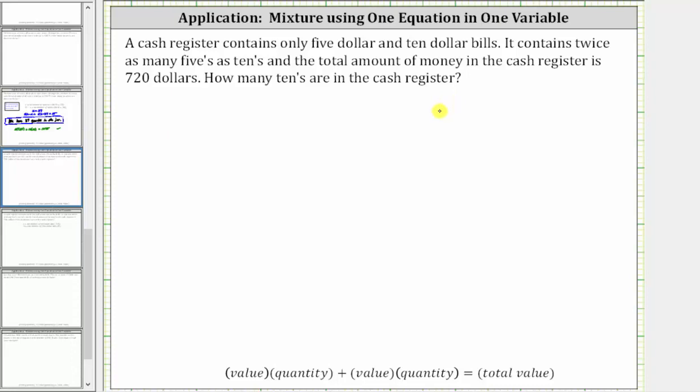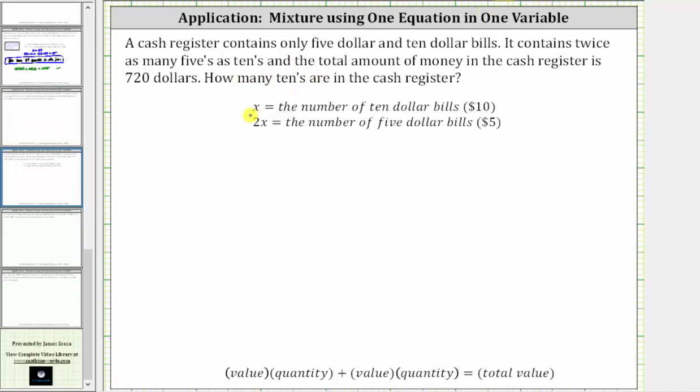We need to begin by writing expressions for the number of fives and the number of tens. Since we're told the cash register contains twice as many fives as tens, we'll begin by letting x equal the number of $10 bills.